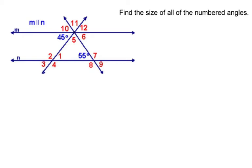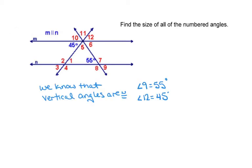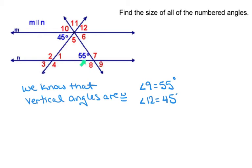So let's start by looking at our vertical angles that we have next to 45 and 55. So angle 9 is vertical to angle 55 degrees, so we know that angle 9 is going to equal 55 degrees. And the vertical angle to 45 degrees is angle 12, so we know angle 12 is 45 degrees. So we can label those.